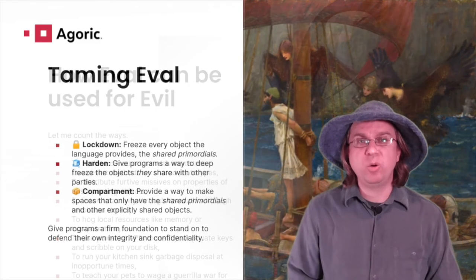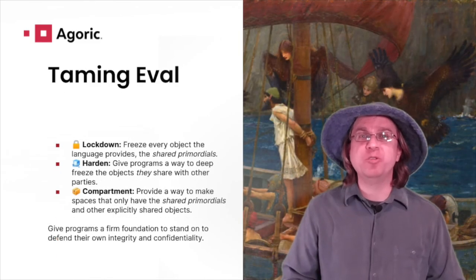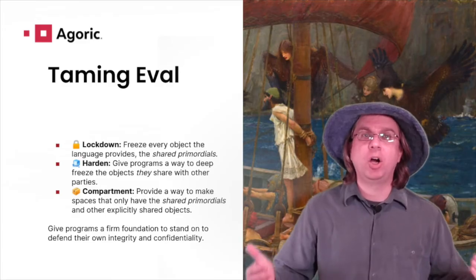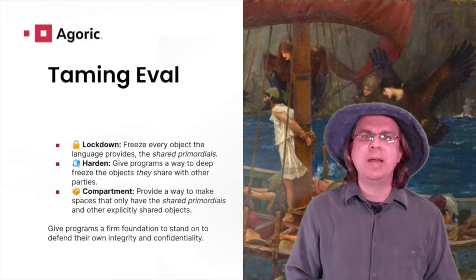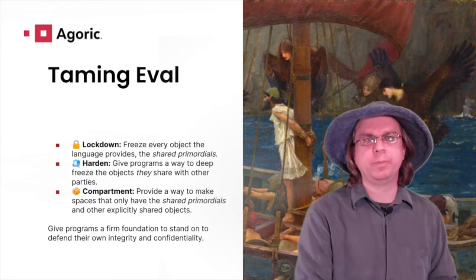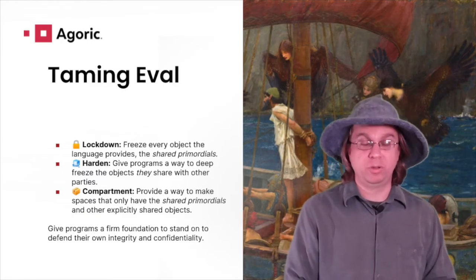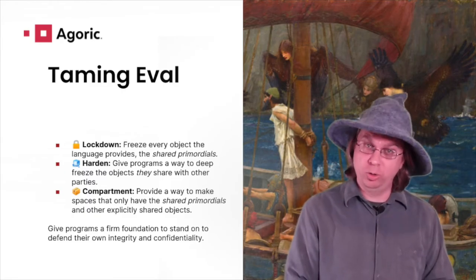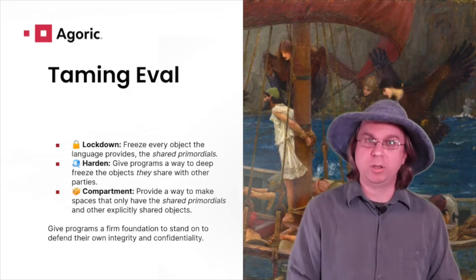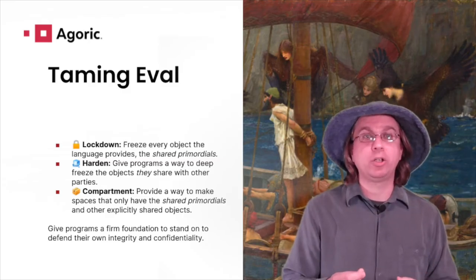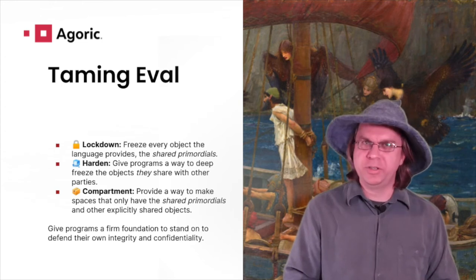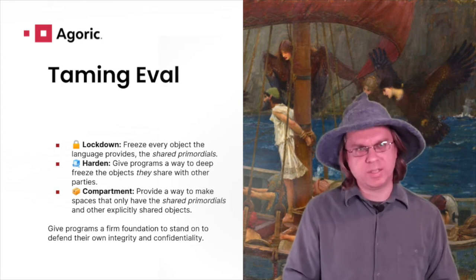Now, we can turn that pervasive mutability in upon itself, taming and hardening the runtime environment, making it suitable for multi-tenant programs. Hardened JavaScript, like Gaul before it, is divided into three parts: Lockdown, Harden, and Compartment. Lockdown prepares, Harden defends, and Compartment isolates.